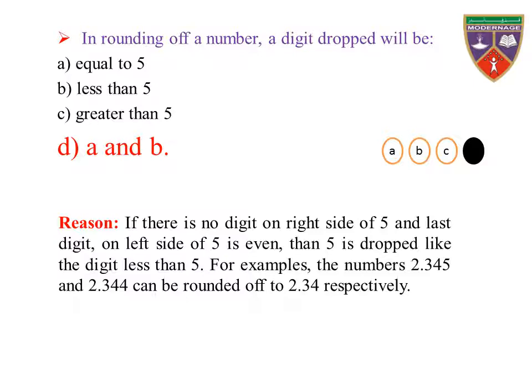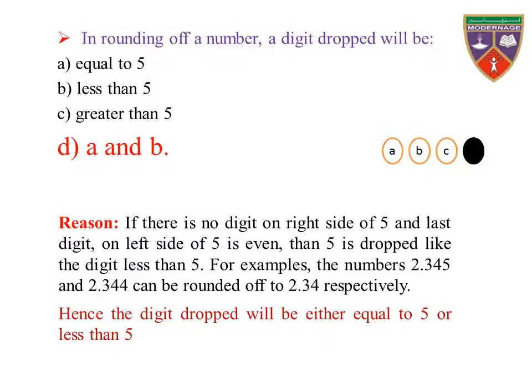In number 2.345, there is no digit on the right side of the 5 and there is an even digit 4 on the left side of the 5, so it is dropped simply. In number 2.344, 4 is less than 5, so it can also be dropped simply. Hence, the digit will be either equal to 5 or less than 5.